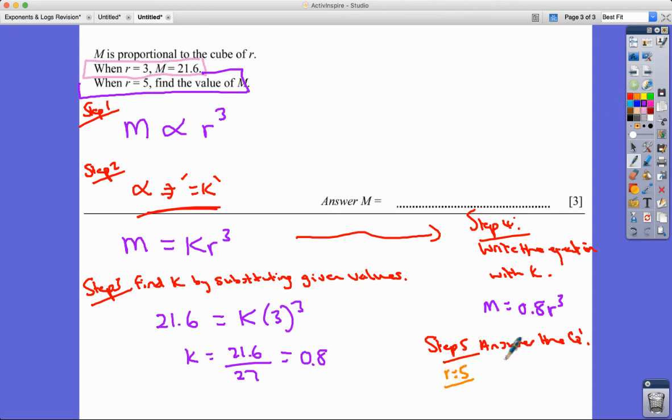So my M is going to be equal to 0.8, put the five in, five cubed. Again, I'm going to need my calculator here. So 0.8 times by five cubed is 100. Three marks.